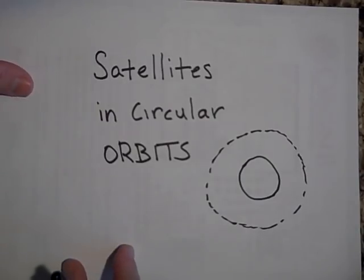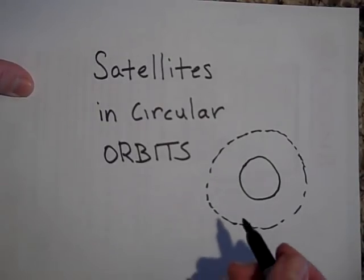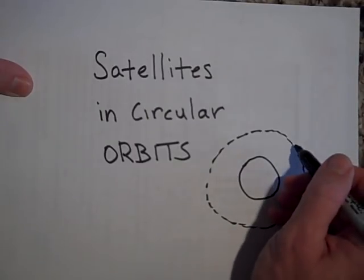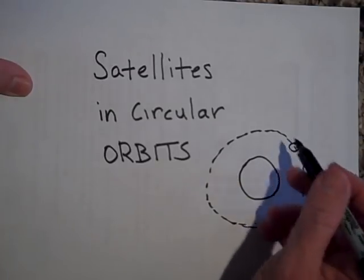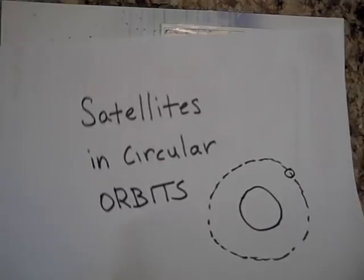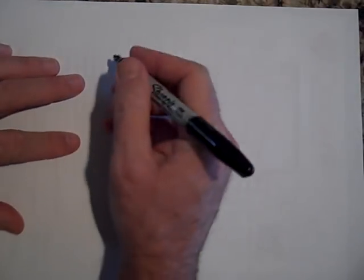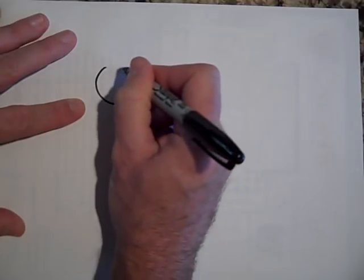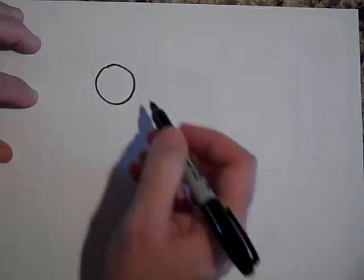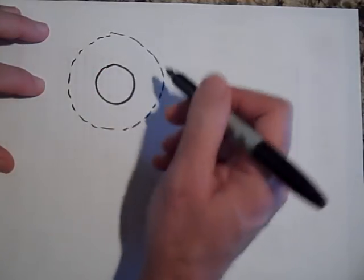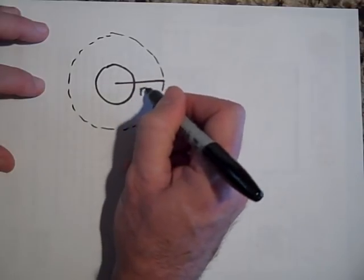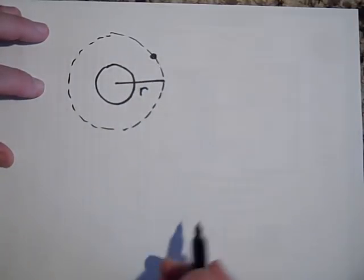Let's talk about the easiest type of orbit — a circular orbit. What we're going to find is: if you put something in orbit around a planet, what velocity do you need to get it to go in a perfect circle? So there it is, out there a distance R away, and if we draw the force diagram of the satellite...